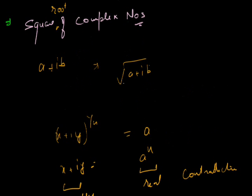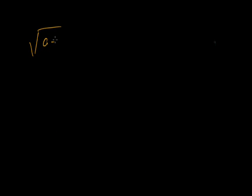Therefore, if a plus iota b is an imaginary number, then the square root of a plus iota b is also an imaginary number, of the form x plus iota y. So if we say the square root of a plus iota b, we assume it equals x plus iota y.